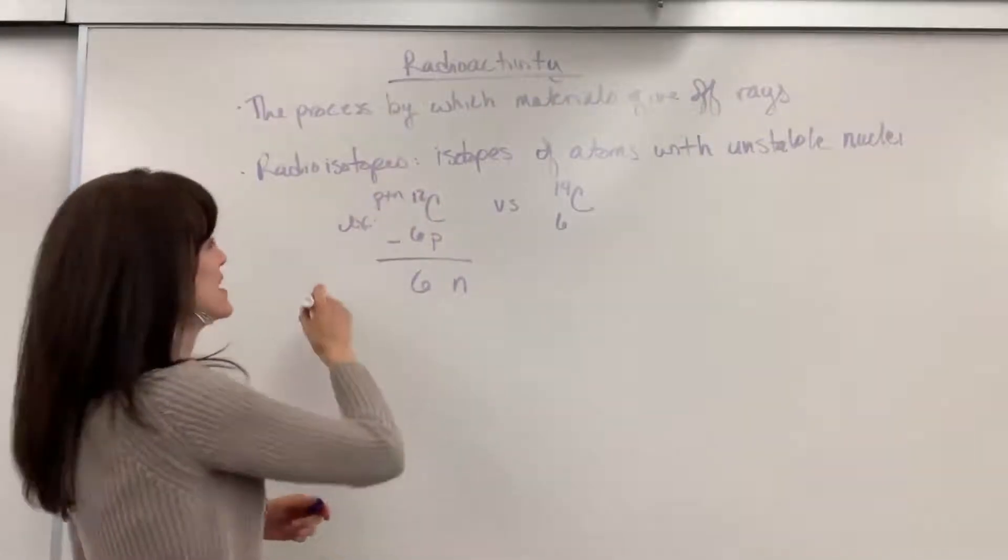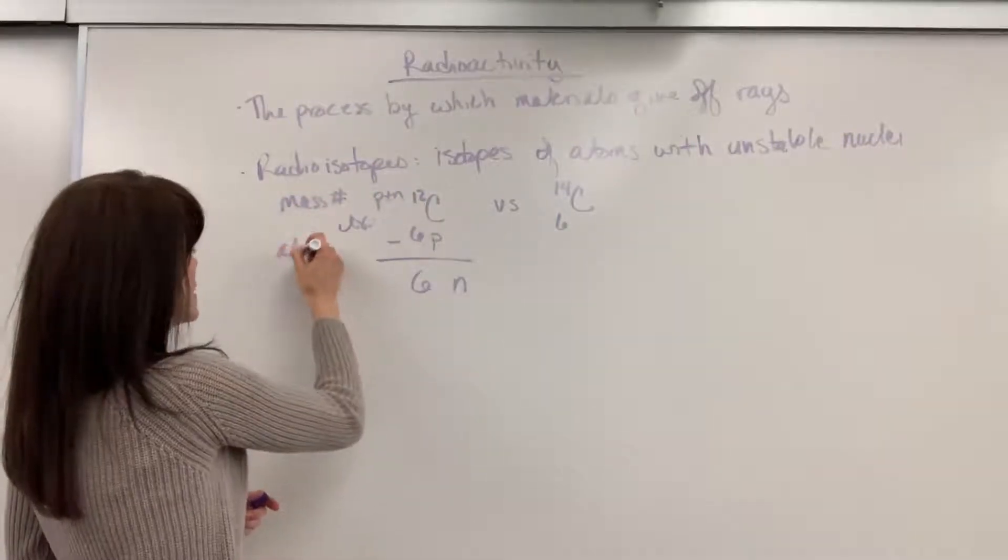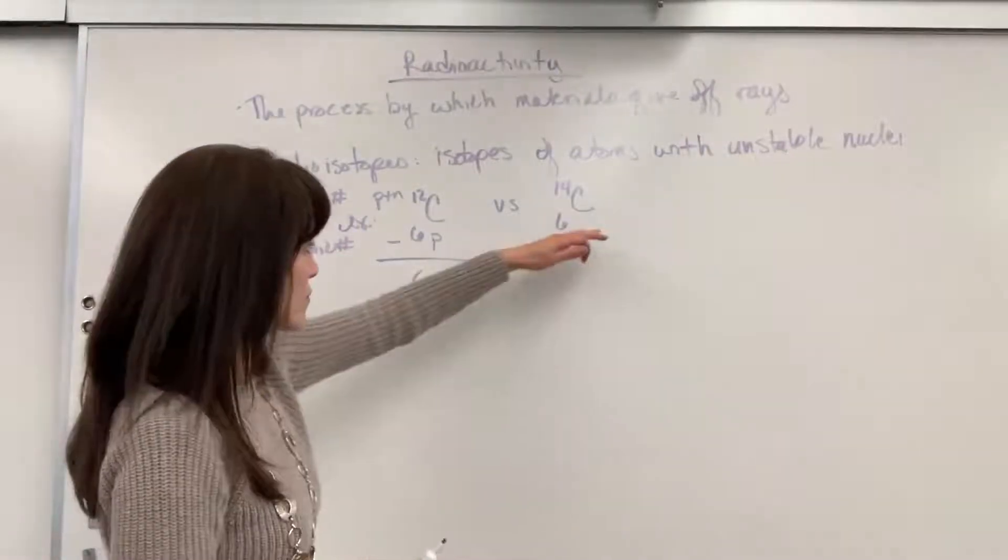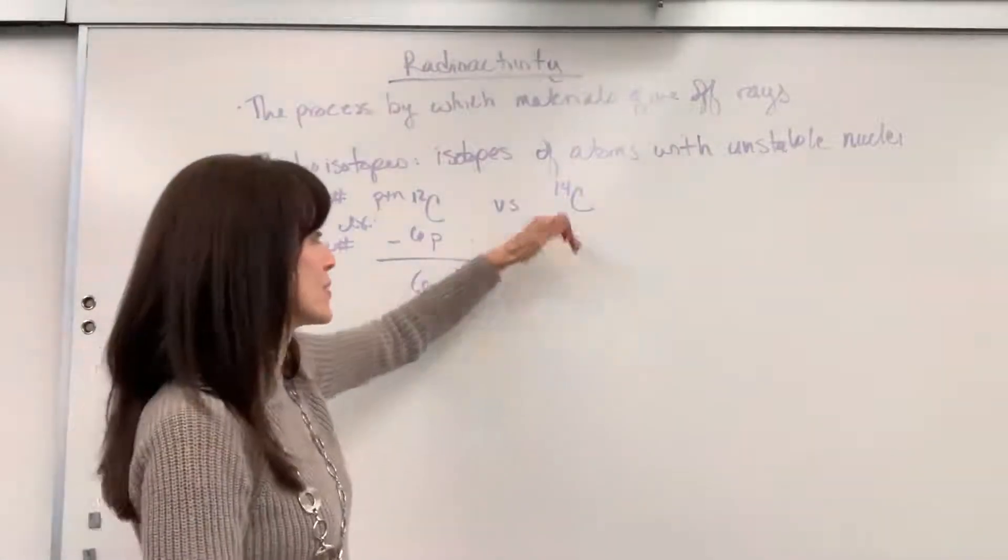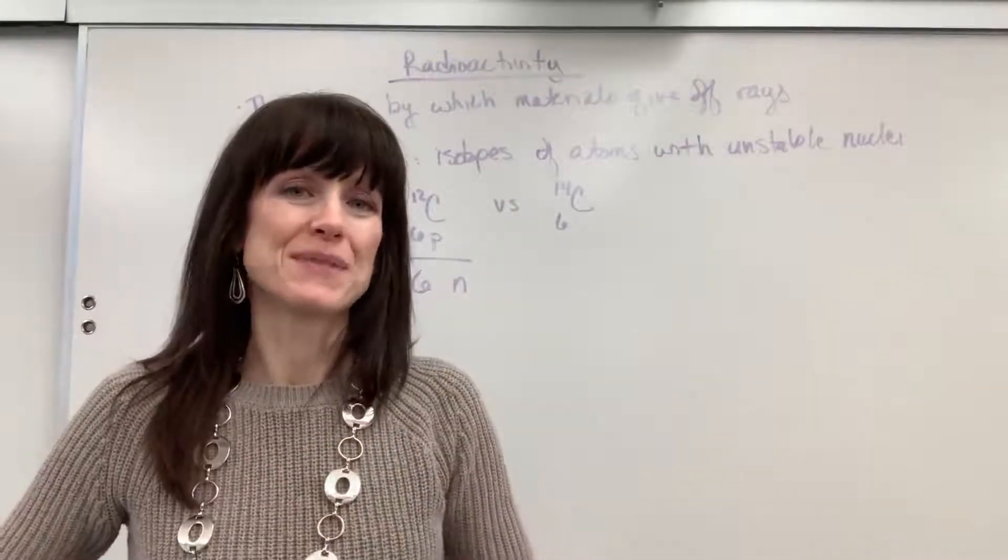That's protons plus neutrons. And again, this is your mass number, and down here is your atomic number. Nice. Little review there. Now, over here, the carbon-14 is how we say it. You say the element's name, and then you say its mass number.